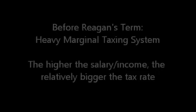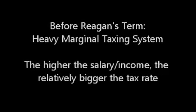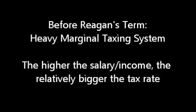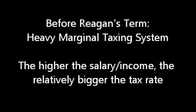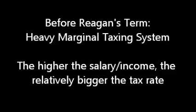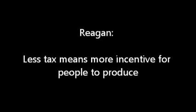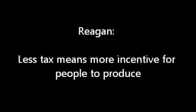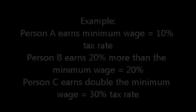Before Reagan's term, there was a scheme in income tax wherein the bigger your salary or the bigger your production for companies, the bigger the tax that you would have to pay to the government. This was counteracted by Reagan by justifying that if there is less tax for people or companies to pay, there is more incentive for them to actually produce more.